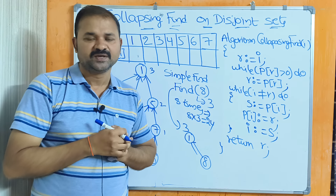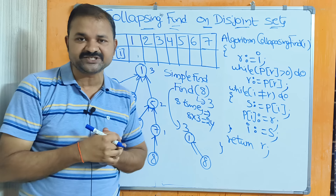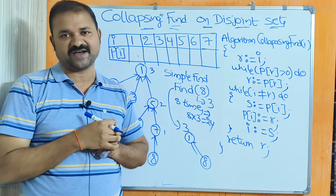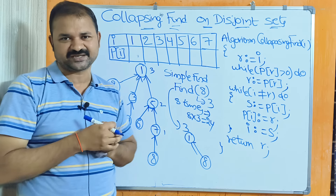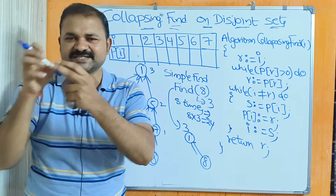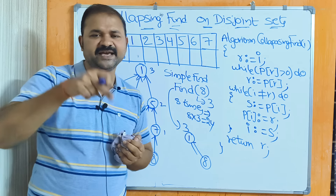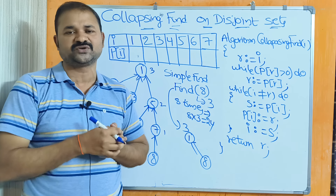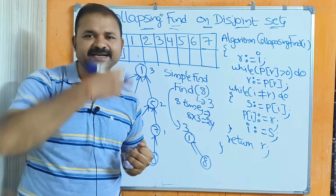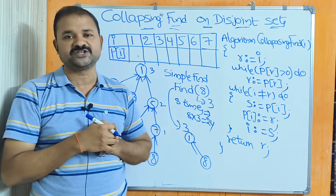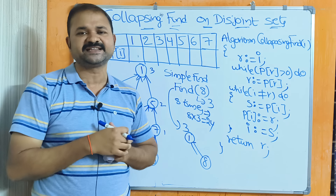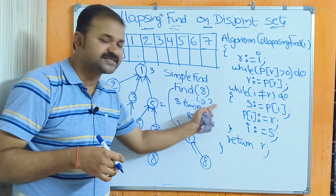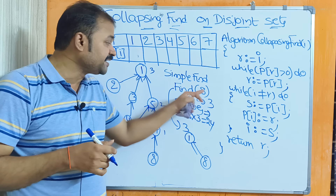Next, 7's parent is 5, so 5 is also greater than 0 — that requires two comparisons. Next, 5's parent is 1, so 1 is also greater than 0 — that requires three comparisons. Now 1's parent is minus 1 because the root node's parent is always a negative value in simple find. Minus 1 is not greater than 0, so the loop exits. Thus 3 comparisons are required to find node 8.